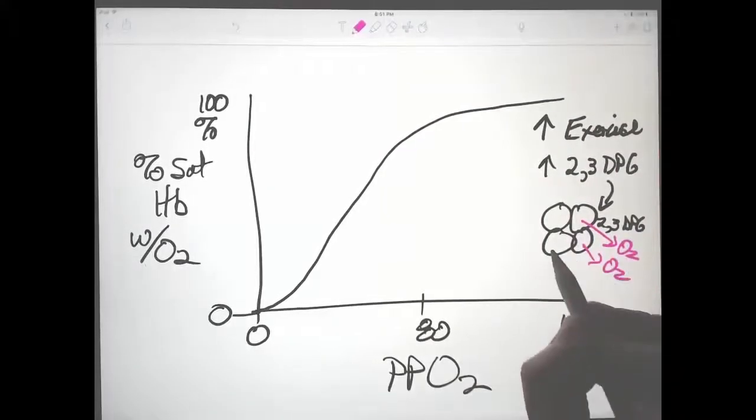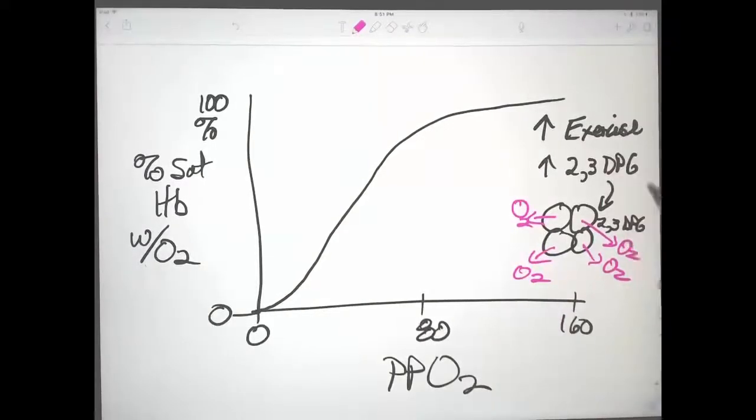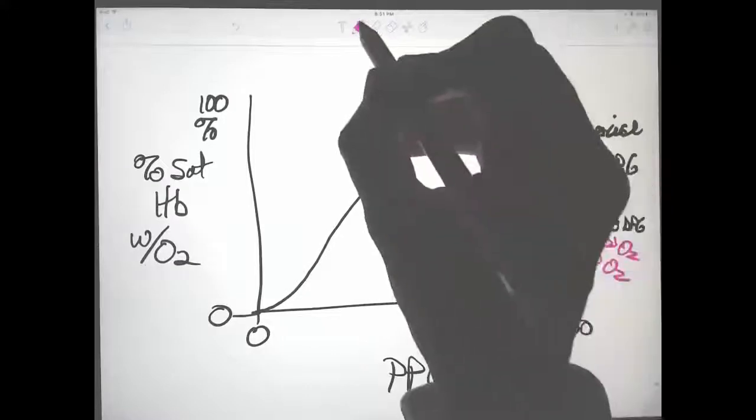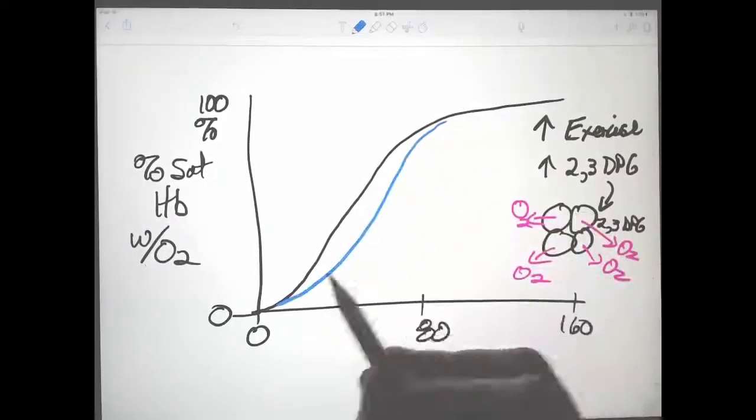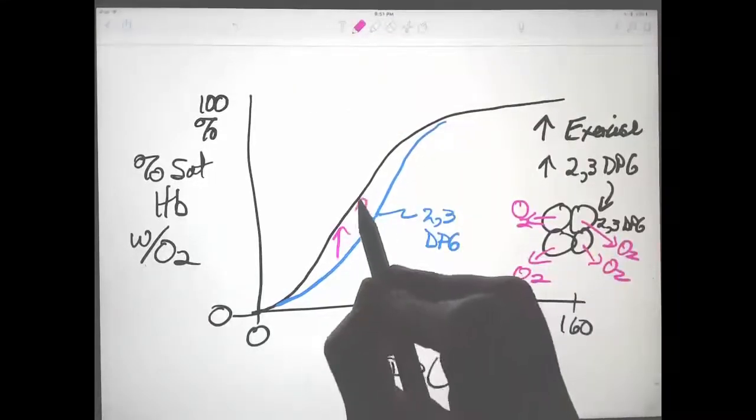It decreases the affinity of hemoglobin for oxygen the same way that pH does, so acid would do exactly the same thing. The result is a reduced affinity for oxygen.